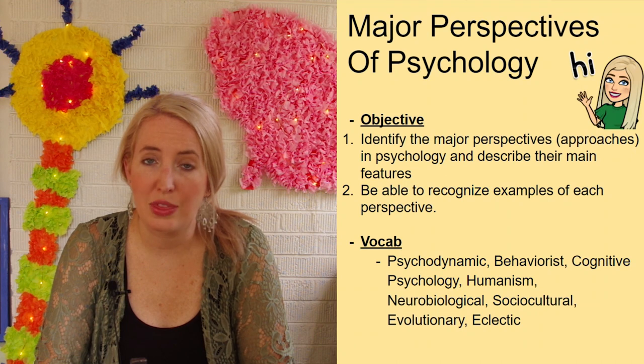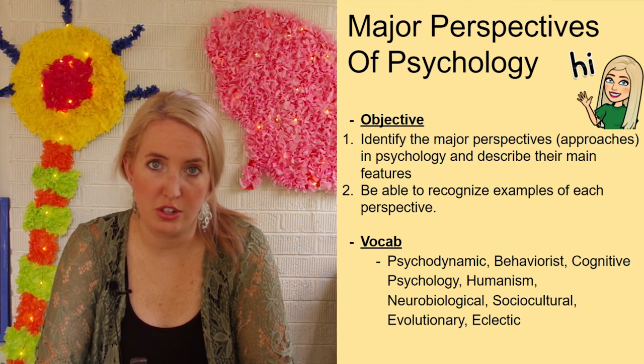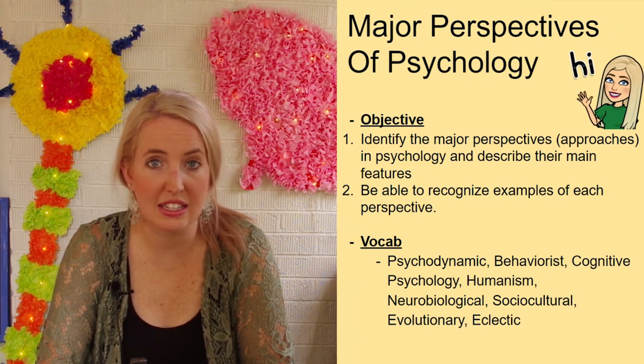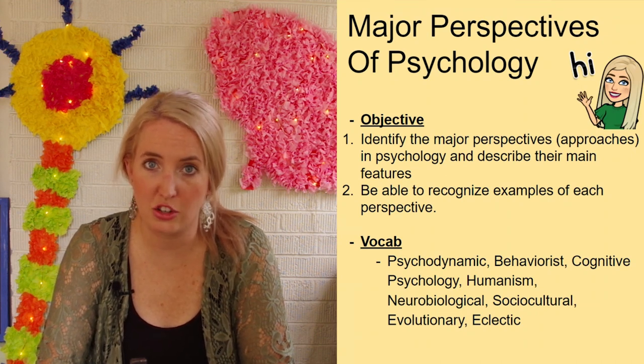Welcome back to today's lesson. Last time we took a look at the history of psychology, some of the pre-scientific roots, and the original subfields. Today we're going to take a look at the modern approaches to psychology — the seven major perspectives that exist in the field of psychology today.